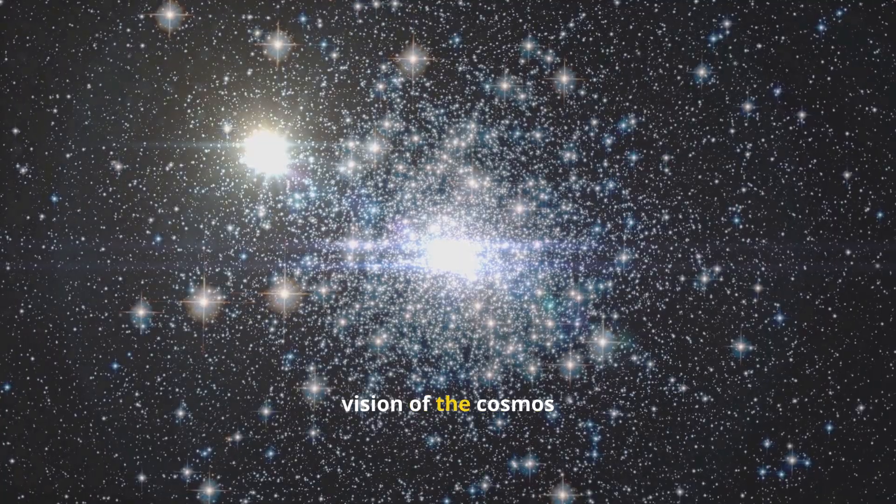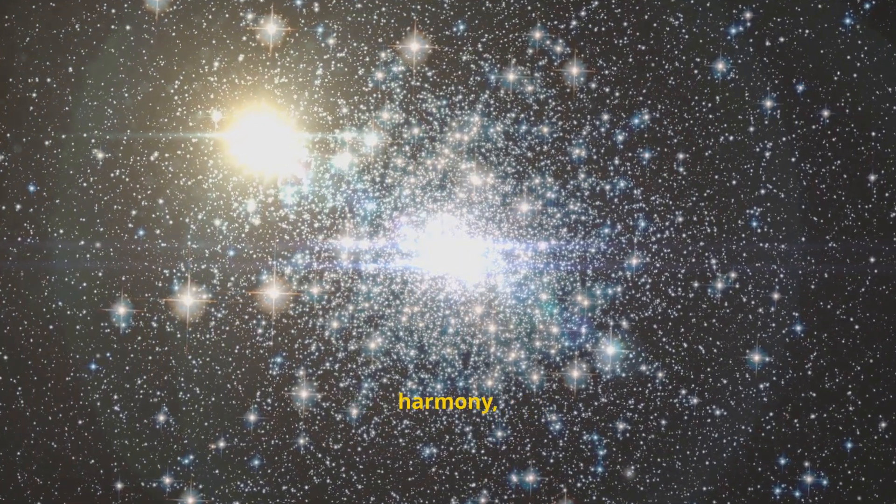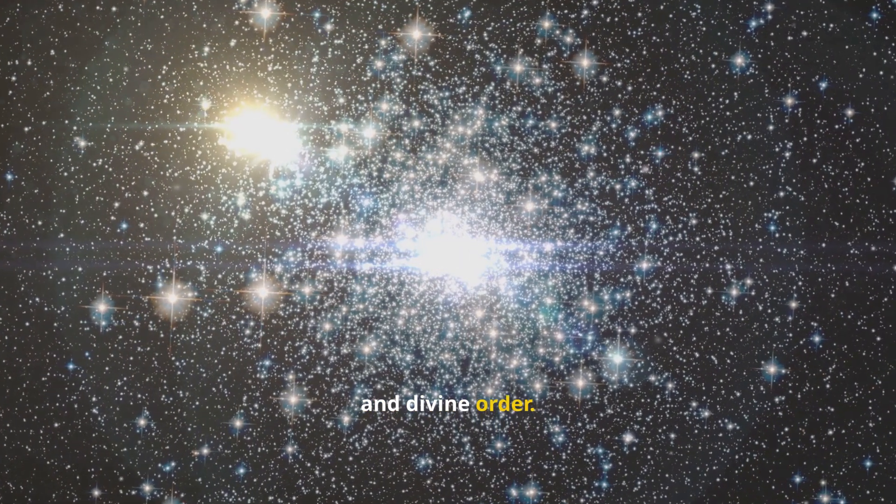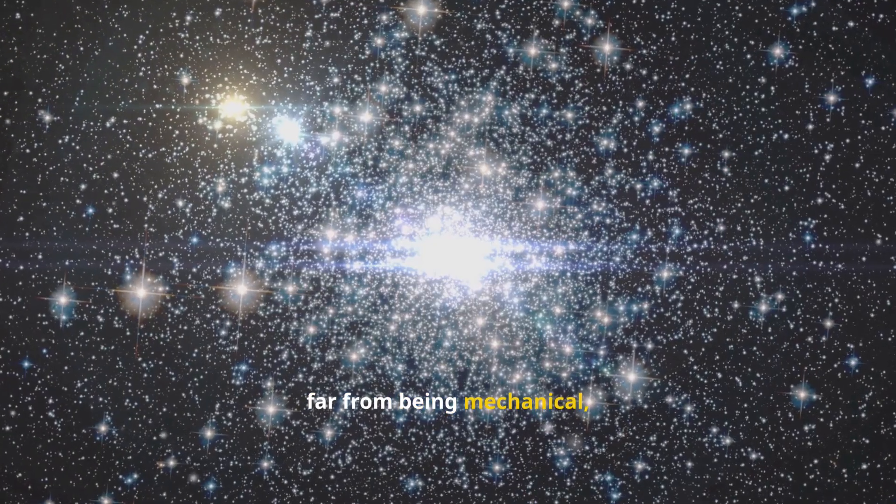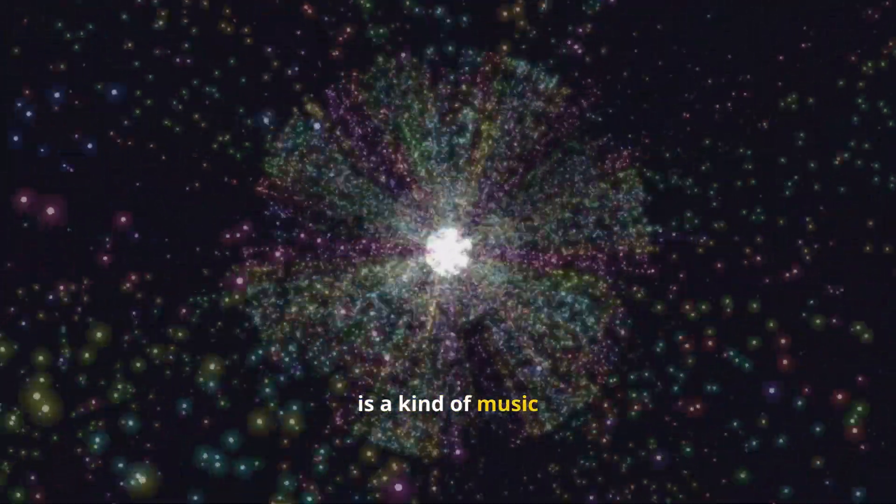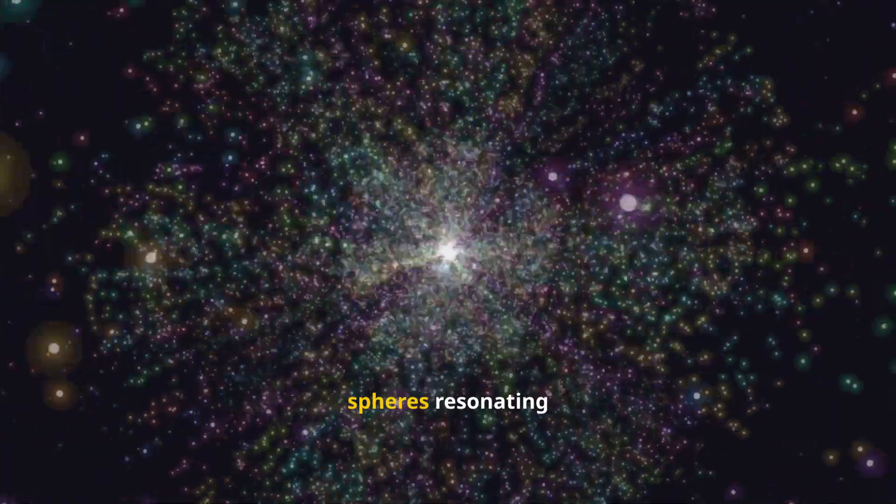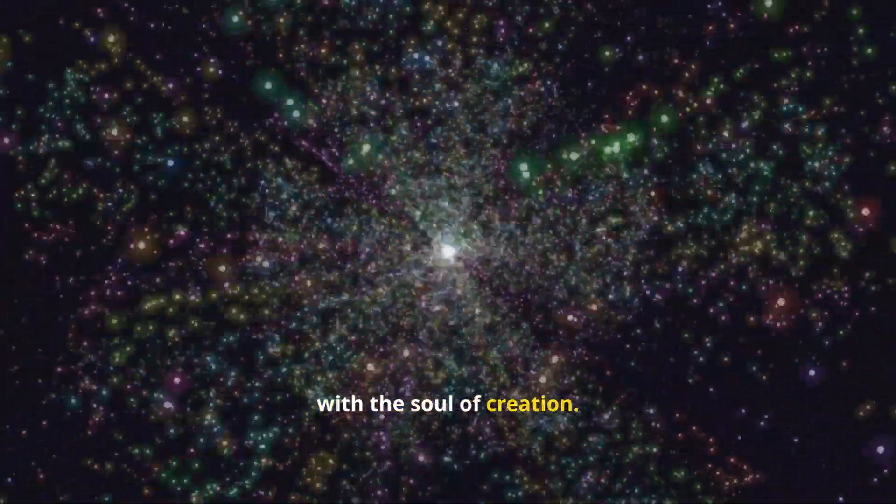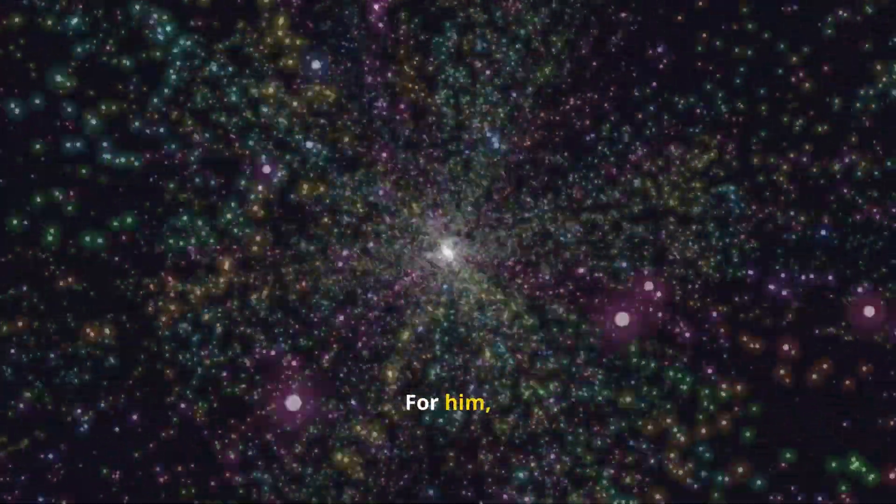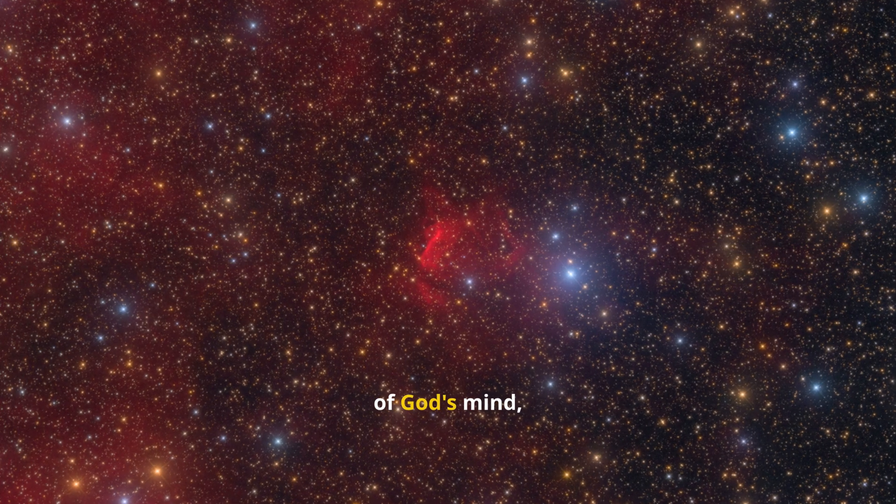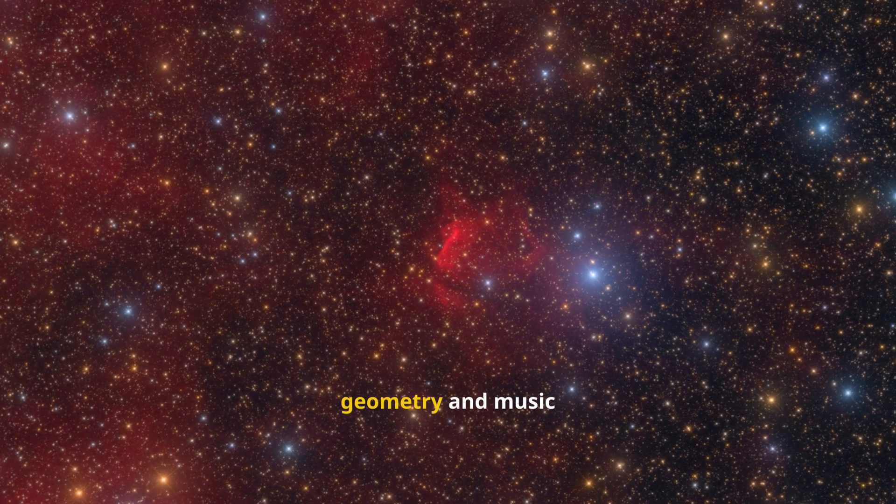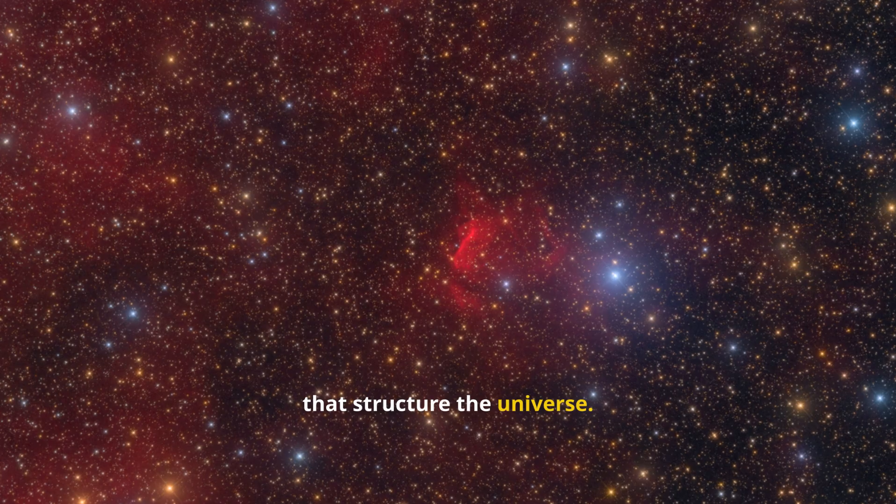The music of the cosmos. Johannes Kepler's vision of the cosmos was one of beauty, harmony, and divine order. He revealed that planetary motion, far from being mechanical, is a kind of music—the harmony of spheres resonating with the soul of creation. For him, consciousness was not a human accident but the reflection of God's mind, perceiving the geometry and music that structure the universe.